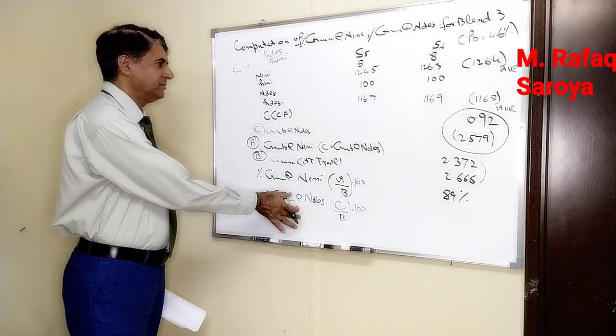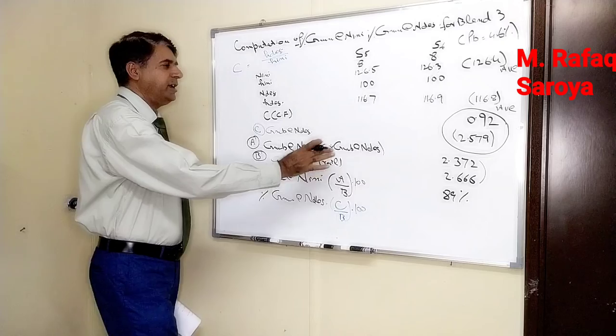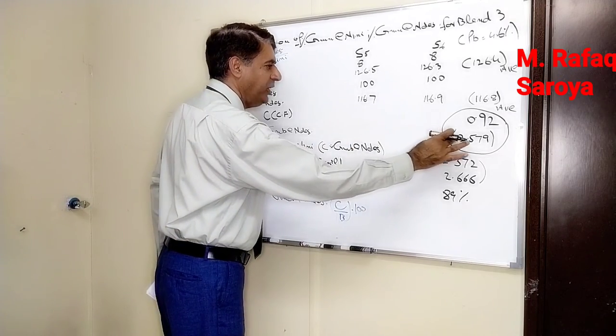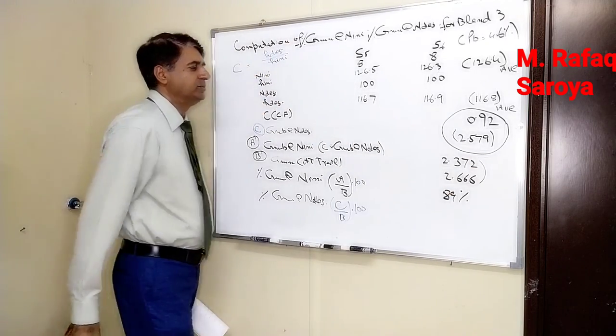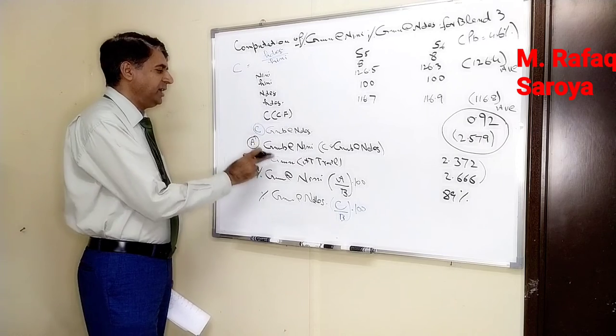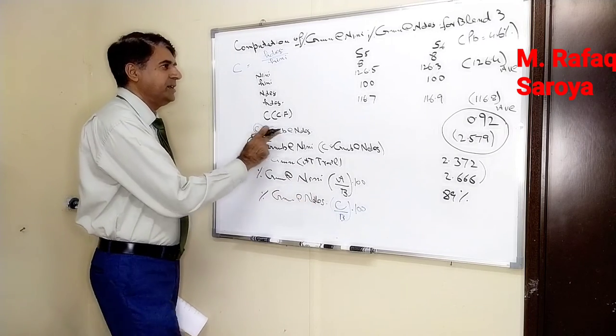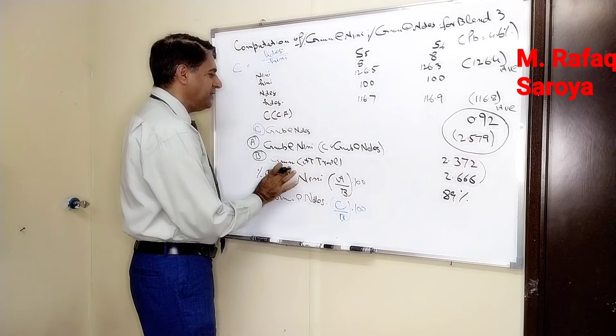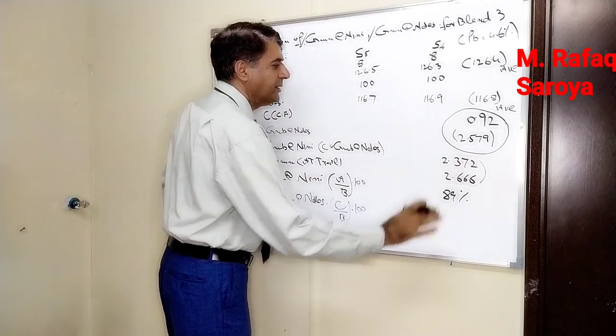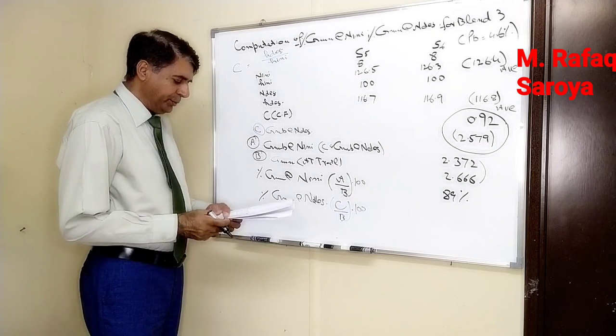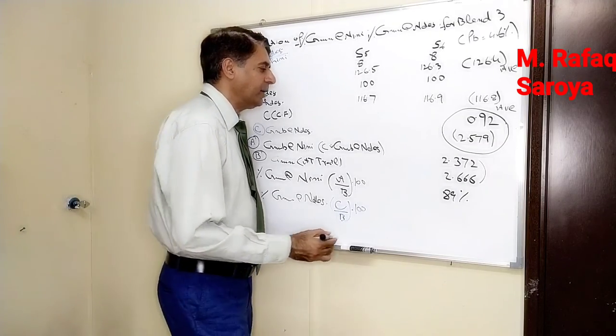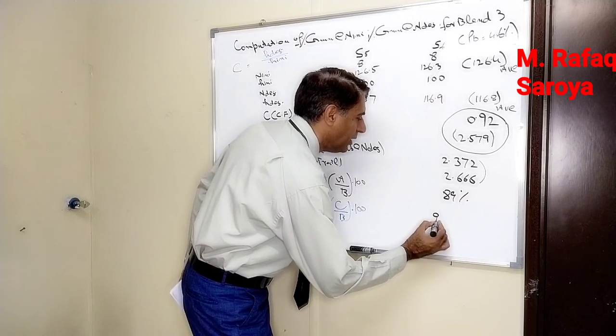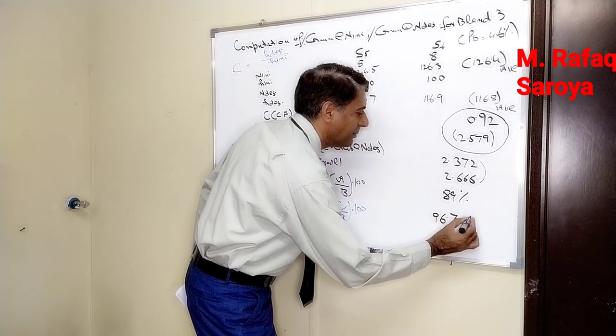And far over here, it is the ratio between this value and this GMM value. Because it is the ratio between C over B, C is this value 2.579, and this GMM 2.666. If I put this value and make the computation, its value comes out to be 96.7 percent.